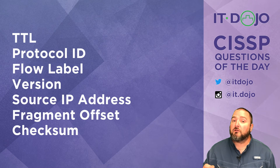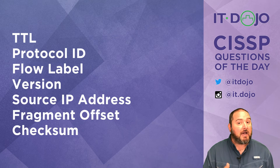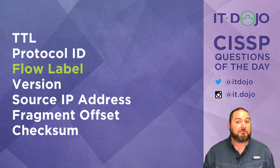Flow label — flow label is a field in an IPv6 header. It does not exist in the IPv4 header. That's the right answer for this particular question.